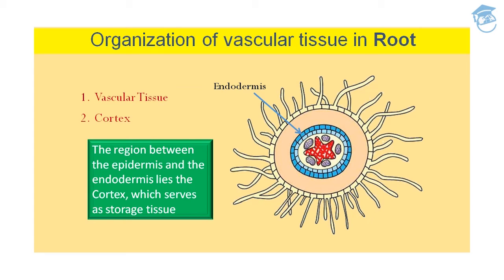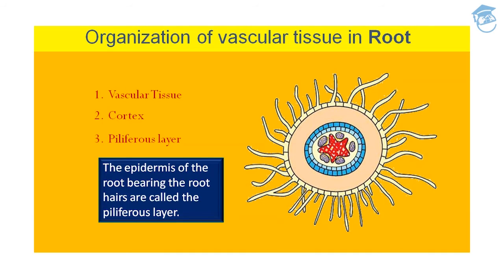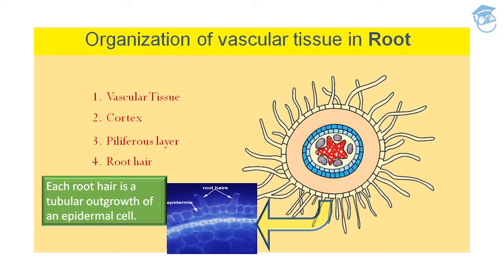The cortex in the root is the region between the epidermis and endodermis, and it serves as a storage tissue. The epidermis of a root bears root hairs, and this layer is called the piliferous layer. These root hairs are tubular outgrowths of epidermis cells, and each root hair is a tubular outgrowth of a single epidermis cell.